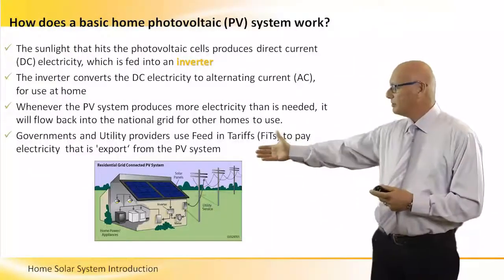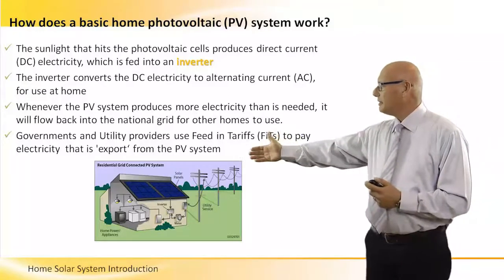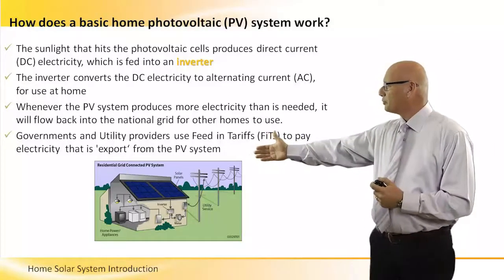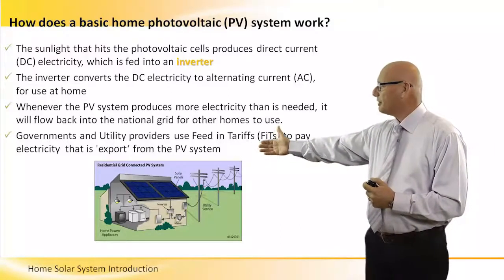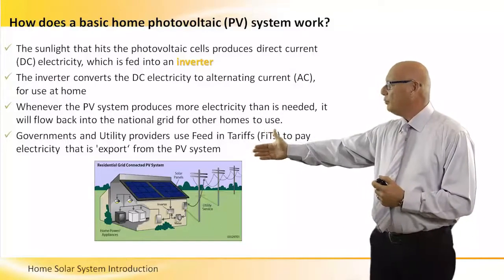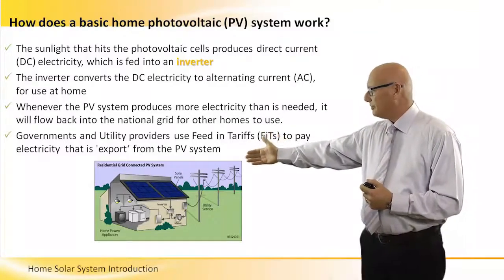Sunlight — let's look at the picture — sunlight hits the photovoltaic cells, which produce direct current electricity, and this is fed into an inverter.